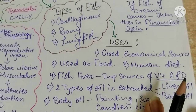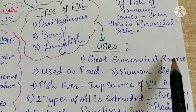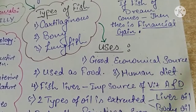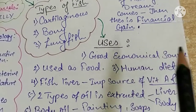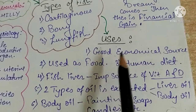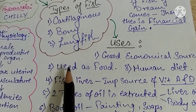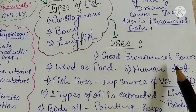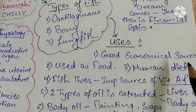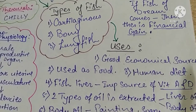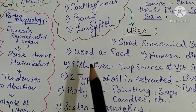Uses of fish: Fish is used as a good commercial source and a staple food in all coastal areas. It is also used in diet, as it provides proteins, vitamins, and minerals.